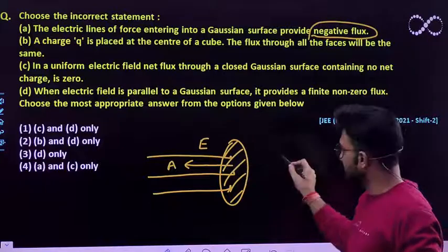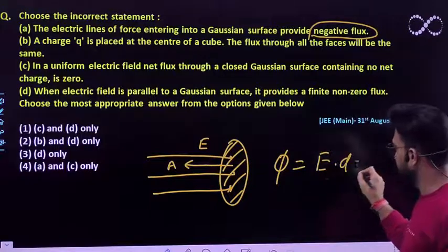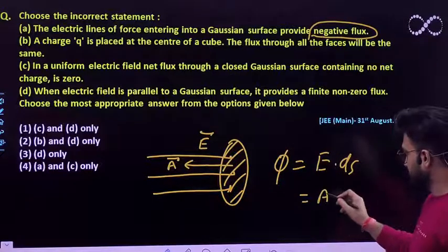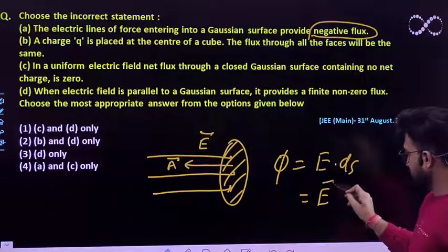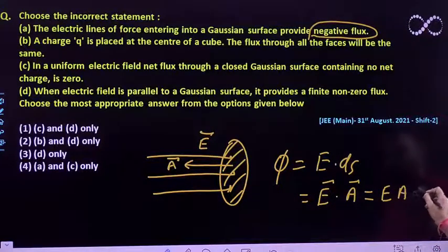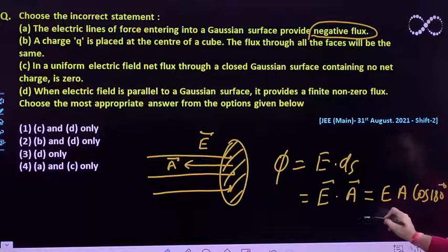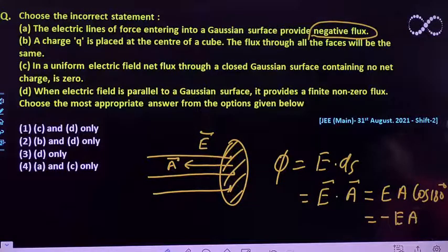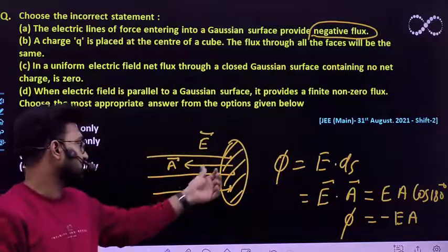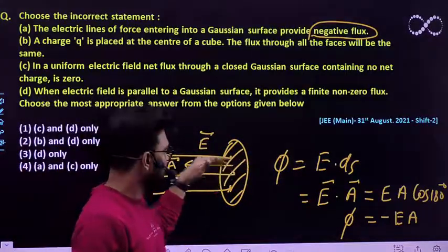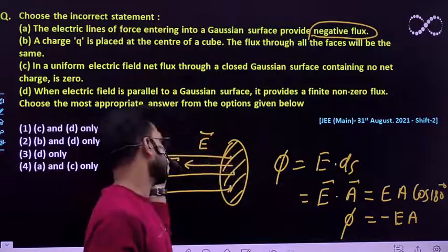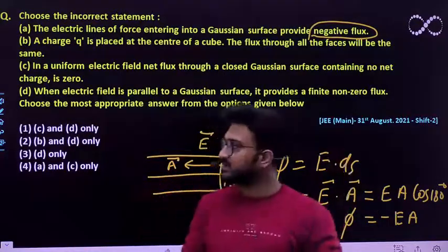The flux is nothing but E dot dS, where E is the electric field and dS is the area vector. So E dot A equals E·A·cos(180°), and cos(180°) is minus one, so it must be equal to minus E times A. The flux linked through it must be negative, because the area is in the opposite direction compared to the entering electric field lines. So that means the first statement is true.